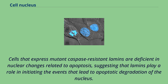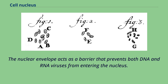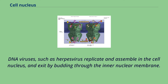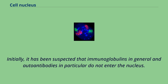The nuclear envelope acts as a barrier that prevents both DNA and RNA viruses from entering the nucleus. Some viruses require access to proteins inside the nucleus in order to replicate and/or assemble. DNA viruses such as herpesvirus replicate and assemble in the cell nucleus and exit by budding through the inner nuclear membrane, a process accompanied by disassembly of the lamina on the nuclear face of the inner membrane. Initially it was suspected that immunoglobulins in general and autoantibodies in particular do not enter the nucleus, but there is now a body of evidence that under pathological conditions they can enter the nucleus.